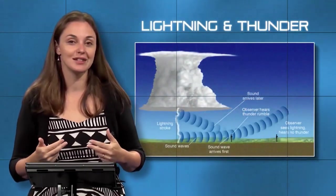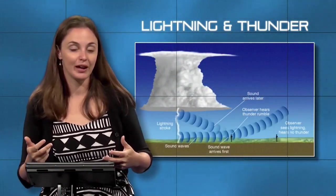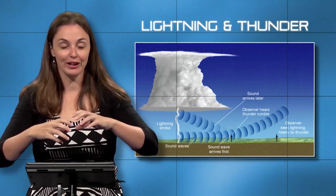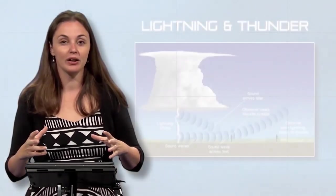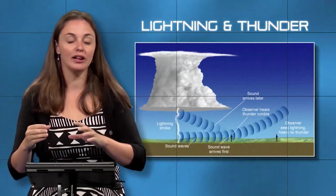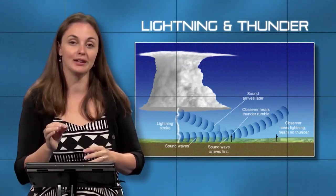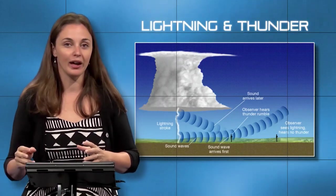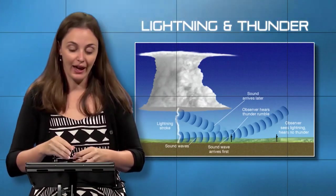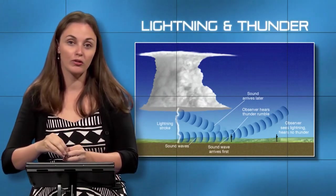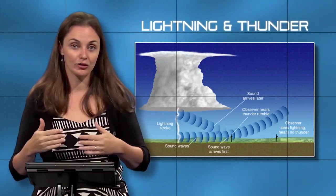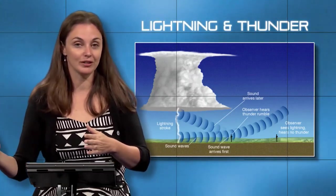The type of thunder you hear is also affected by distance. If lightning struck very close to you, you'd hear a sharp crack of thunder — one immediate sound from a point very near you. If it's a couple miles away, sound waves travel from multiple points along that single bolt and reach you at different times, producing the more distant rumble of thunder. If it's further than about three miles, you won't hear the thunder at all.